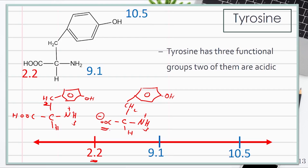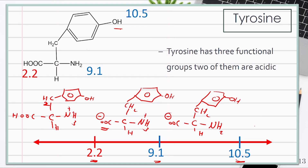So we have the carboxylate here. Above 9.1, we expect the ammonium group to be deprotonated. And above 10.5, we expect the hydroxyl group to be deprotonated, giving us O minus, and the carboxylate.